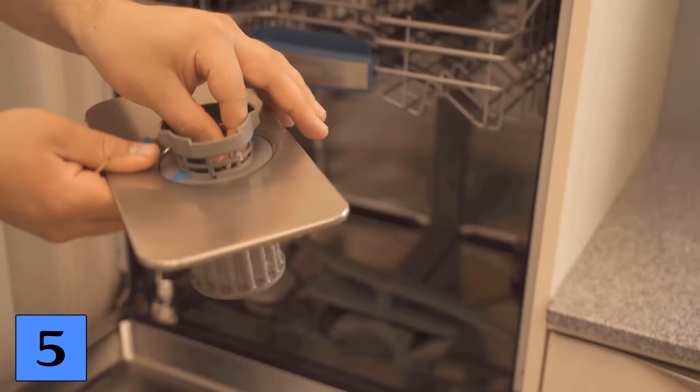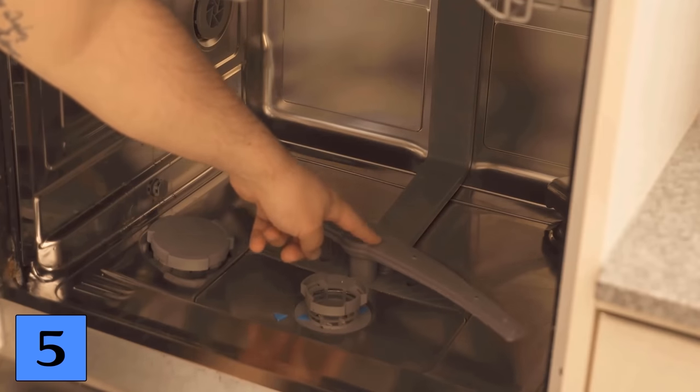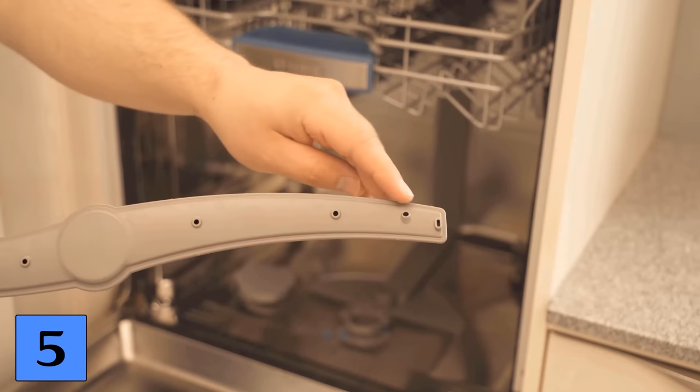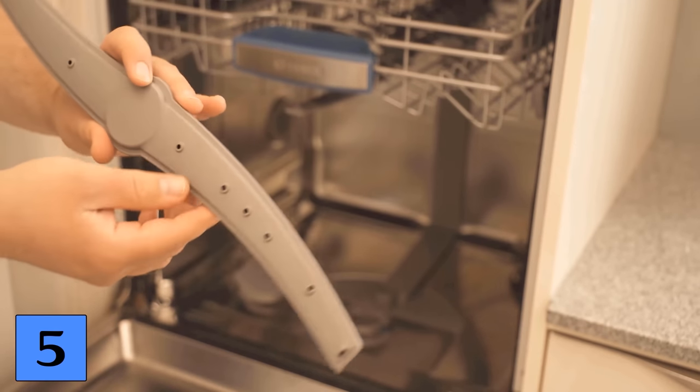The same applies to the spray arms. You can usually get these out by carefully pulling and then you should also check here whether the holes are all really clean and are not clogged.